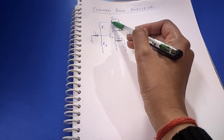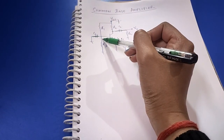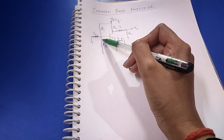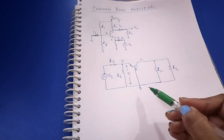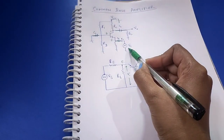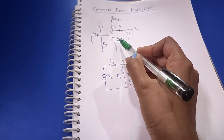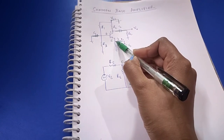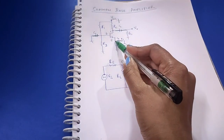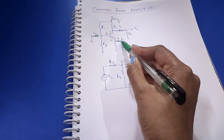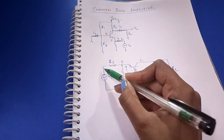Similarly, this part is grounded and this part is also connected to ground, so resistor R1 is also shorted. That's the AC equivalent circuit of this common base amplifier. Here you can see the collector terminal, base, and emitter terminal. At the emitter terminal we have connected the resistance RE (emitter resistance), the capacitor is shorted, and here we have resistance RS and input VS.